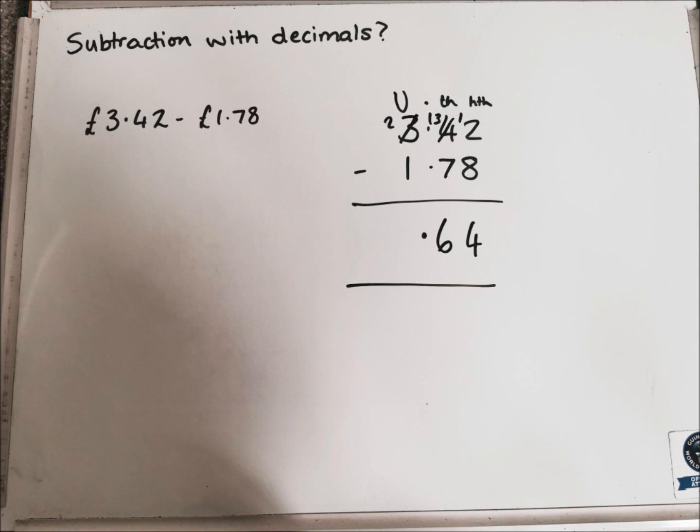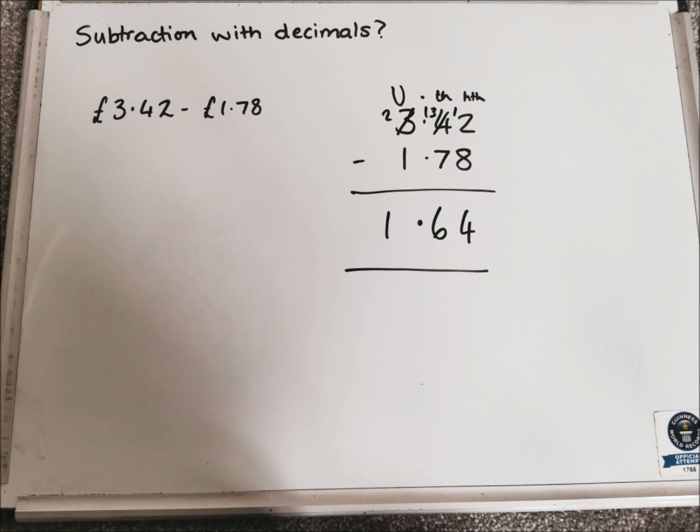Put in the decimal point, just underneath where you have the decimal point in the question. And then in the units, we've got 2, take away 1, which is 1. So the final answer there is £1.64.